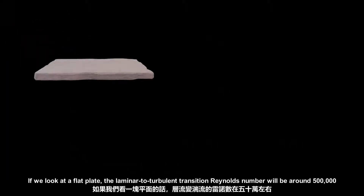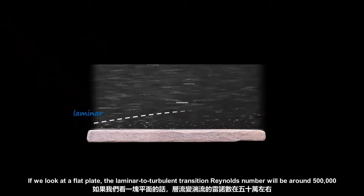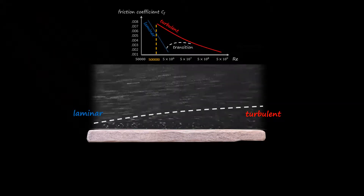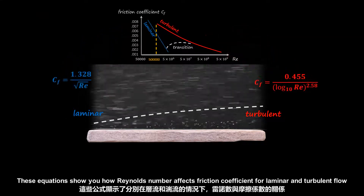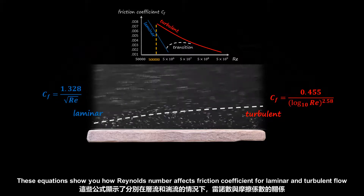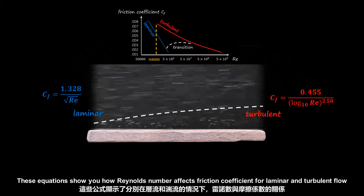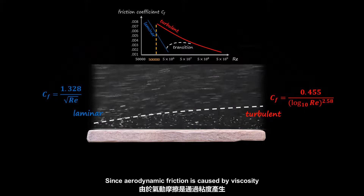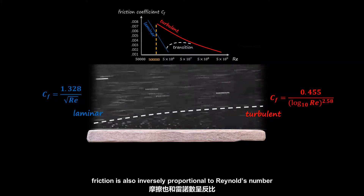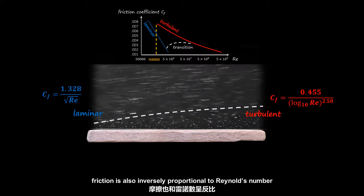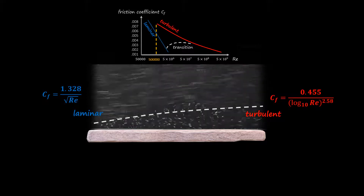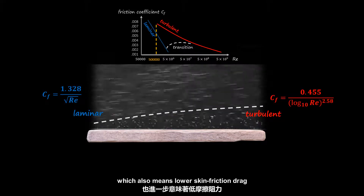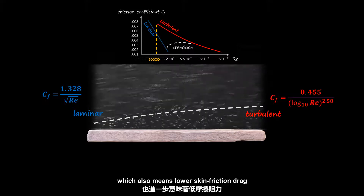If we look at a flat plate, the laminar-to-turbulent transition Reynolds number will be around 500,000. This equation shows how Reynolds number affects the friction coefficient for laminar and turbulent flow. Since aerodynamic friction is caused by viscosity, friction is also inversely proportional to Reynolds number. Higher Reynolds number means lower friction coefficient, which also means lower skin friction drag.